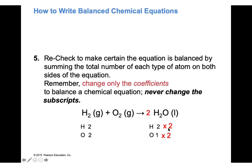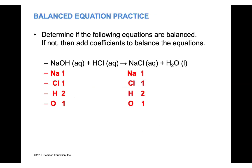Now I have four hydrogens on the right but only two on the left, so I put a coefficient of 2 in front of H₂. Let's recheck: four hydrogen on the left, four hydrogen on the right; two oxygen on the left, two oxygen on the right — it's a balanced chemical equation.